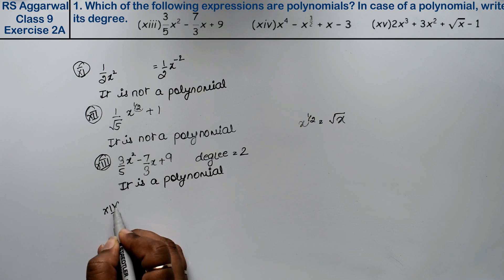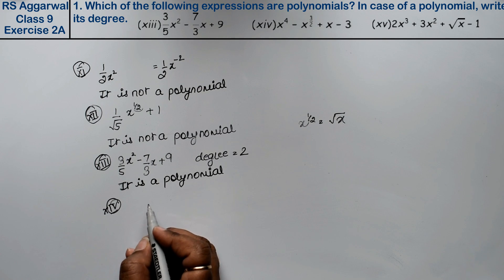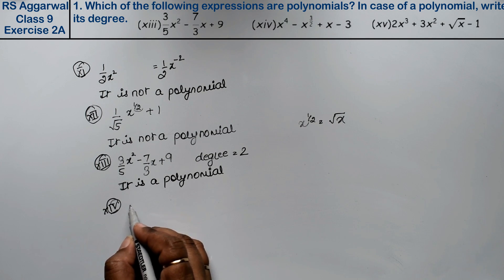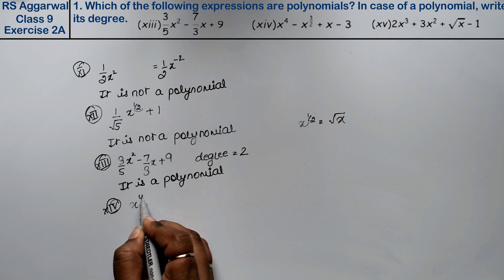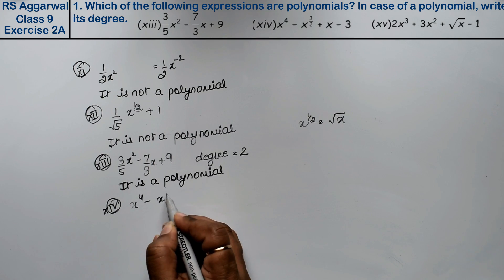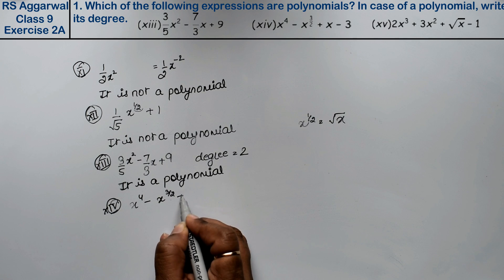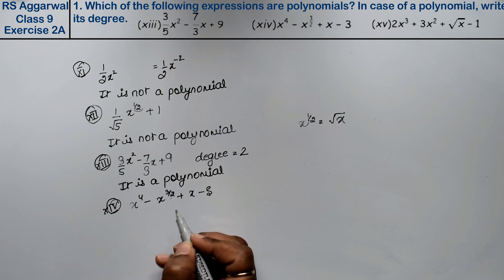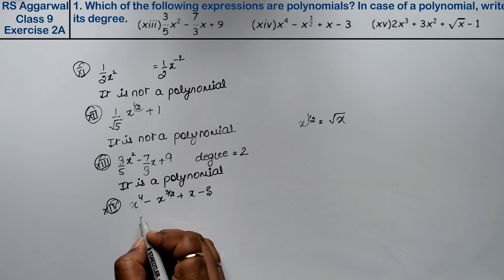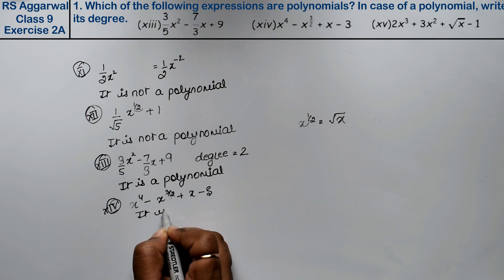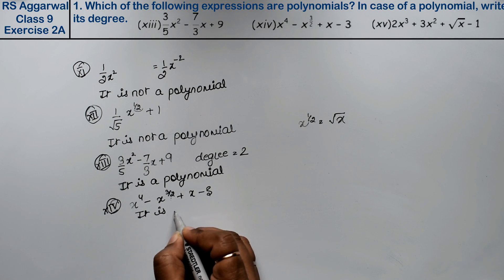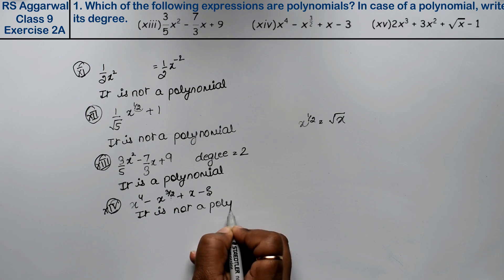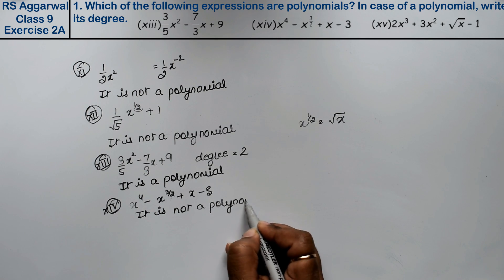The next part is x⁴ minus x to the power 3/2 plus x minus 3. Since the power 3/2 is a fraction, hence it is not a polynomial.